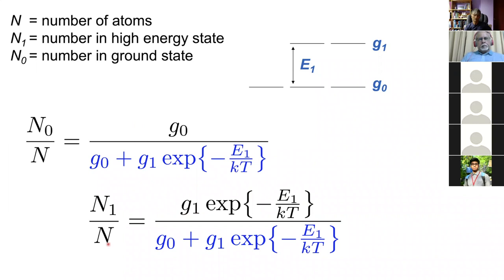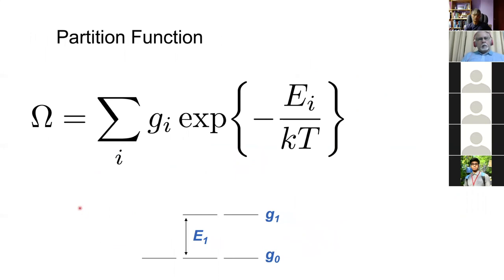This defines what we call a partition function, which is very common in thermodynamics. The partition function is simply the sum of all terms, where g_i is the degeneracy of the i-th state and the energy difference between the states is measured relative to the ground state.